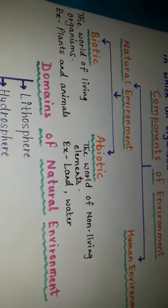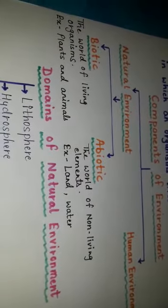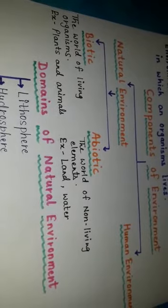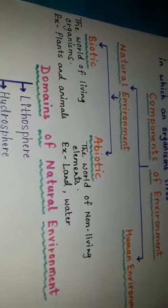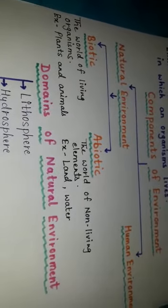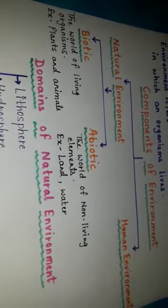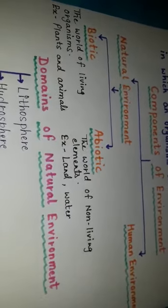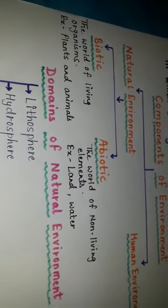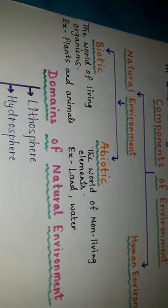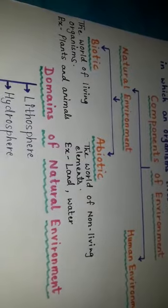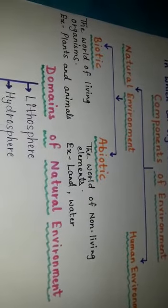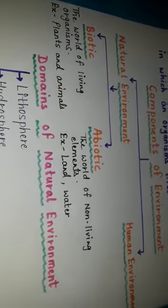Natural environment is made up of those things which are not made by man, rather these are created by nature. It comprises both biotic and abiotic components. It includes physical features such as mountains, plateaus, plains, valleys, and all living and non-living things.